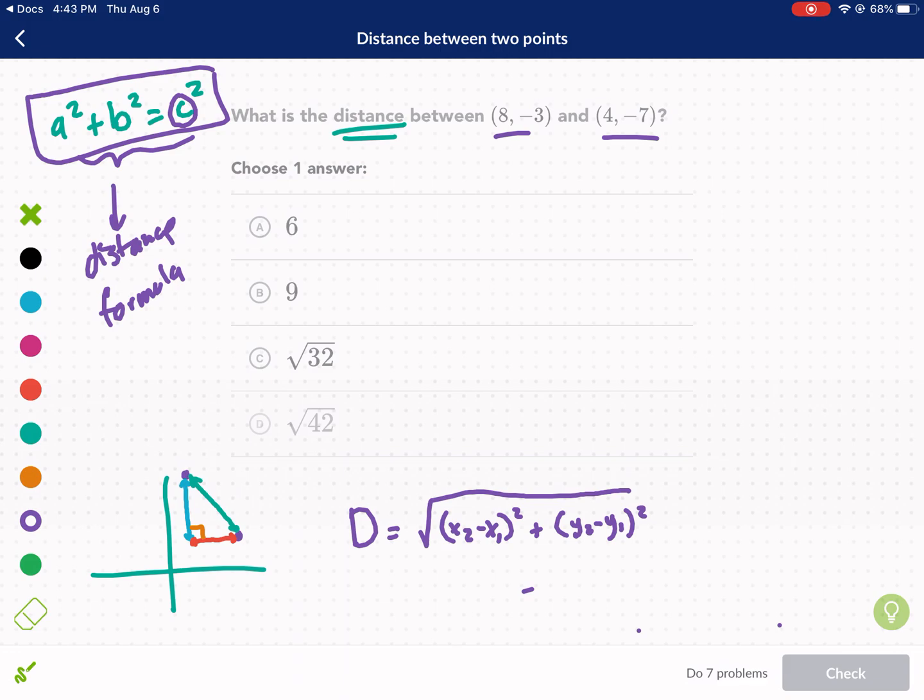Now, what's required in doing the distance formula? Well, the first thing you need to do is label. So, I'm going to label this x₁, y₁, x₂, y₂. Now, it doesn't matter which one you consider the first point or the second point. The main thing is you need to make sure your x₁ and y₁ are for the same point and that your x₂ and y₂ are also for the same point. You can't have x₁, y₂, x₂, y₁. That doesn't make any sense.